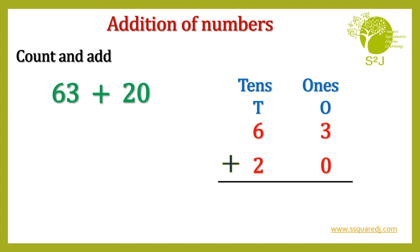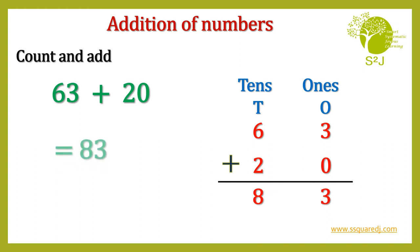Let's add them. 3 plus 0 is 3 and 6 plus 2 is 8. So 83. 63 plus 20 is 83.